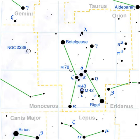Eta Orionis drops in brightness every four days from a combined apparent magnitude of 3.31 to about magnitude 3.6. This is due to eclipses between the two closest components, A and Aa. The primary and secondary eclipses are very similar, 0.24 and 0.23 magnitudes deep respectively. It has also been suggested that component AB is intrinsically variable with a period of 0.3 days and a very small amplitude.